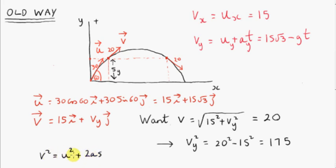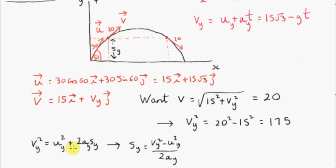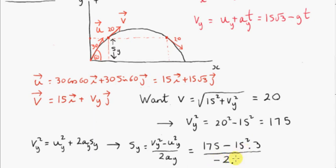Here is the formula we will use. This is only true for linear motion with constant acceleration a, and that's the case in the y direction. ay is the acceleration due to gravity, which is negative — it's minus g. We rearrange this formula to make sy the subject, then plug in. vy squared is 175, and uy is 15 root 3, so uy squared is 15 squared times root 3 squared. We divide by twice the acceleration, which is minus 2g, using 9.81. Working this out to two decimal places, we get 25.48 meters.